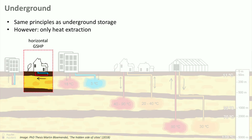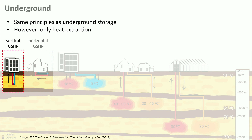Ground source heat pump systems use the top layers of soil, and there are two types. Horizontal ground source heat pumps use a network of pipes close to the surface — 1 to 2 meters — and although they are relatively easy to build, they are also more subject to seasonal changes. Vertical ground source heat pumps use one or more drilled shafts that go much deeper, up to 100 meters. This means a small surface footprint can deliver much more energy than a horizontal system, but drilling instead of digging is more expensive.